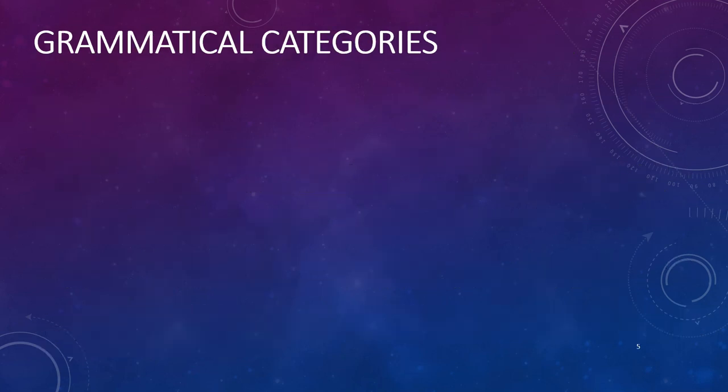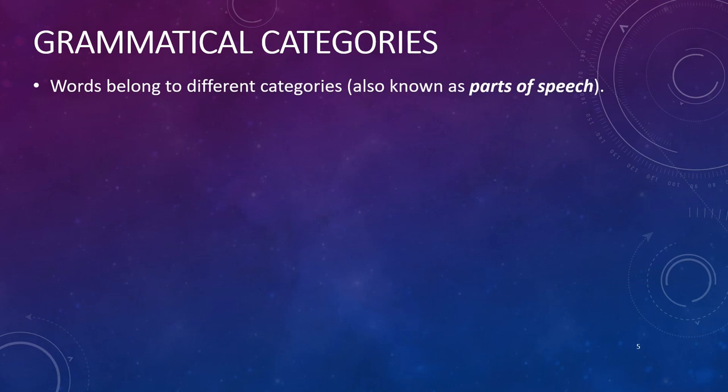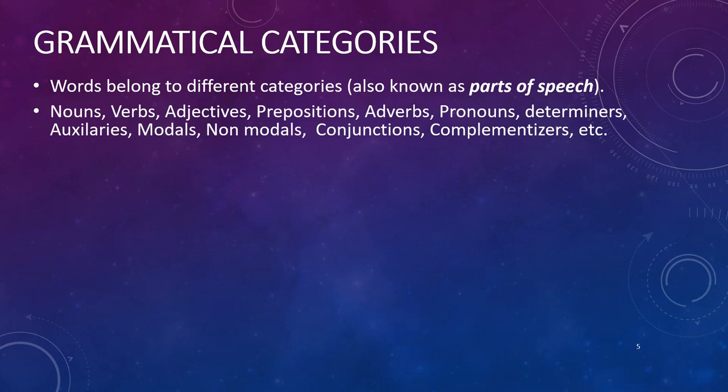Words belong to different categories, also known as parts of speech. The phrase 'parts of speech' is a bit of a misnomer because language can be expressed in many ways, not just through speech — for example, through writing, through sign languages, etc. These different categories you are probably familiar with. They include nouns, verbs, adjectives, prepositions, adverbs, pronouns, determiners, auxiliaries, modals and non-modals, conjunctions, complementizers, etc.